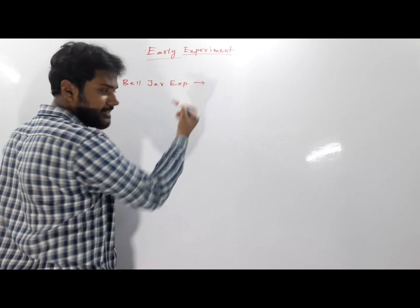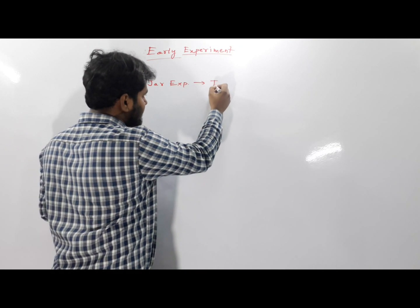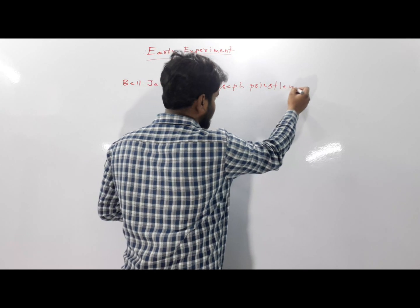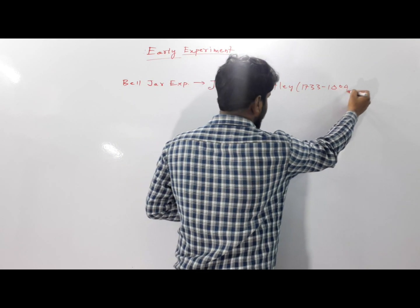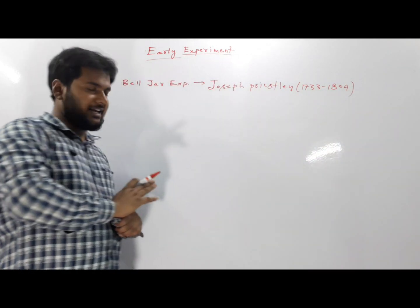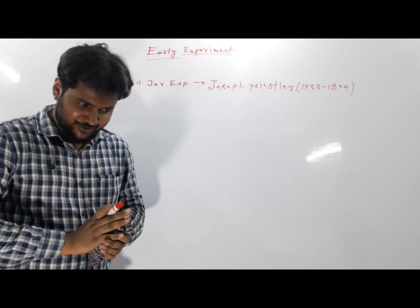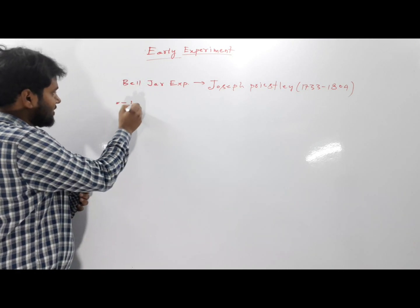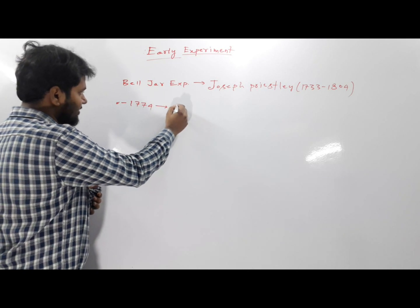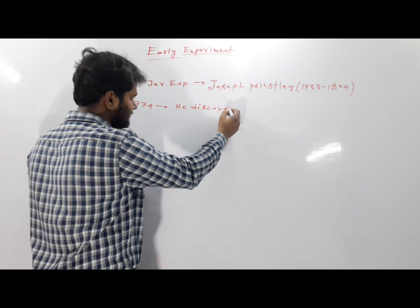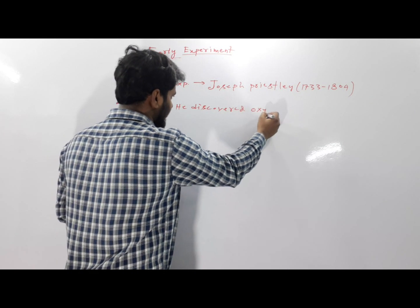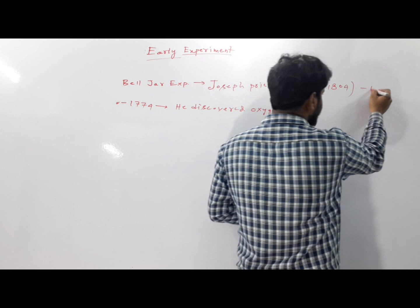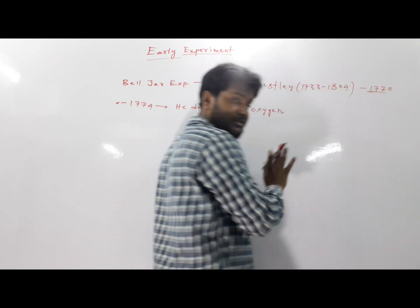The bell jar experiment was performed by Joseph Priestley. He is a well-known scientist, also famous for discovering oxygen in 1774. He performed this bell jar experiment in the year 1770 — mark this year, 1770.